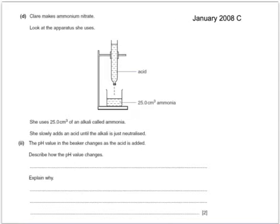Here's a past exam question. Claire makes ammonium nitrate. Look at the apparatus she uses. She's got a burette containing acid, and that's being added to a solution of 25 cubic centimetres of ammonia. She slowly adds the acid until the alkali is just neutralised. The pH value in the beaker changes as the acid is added.